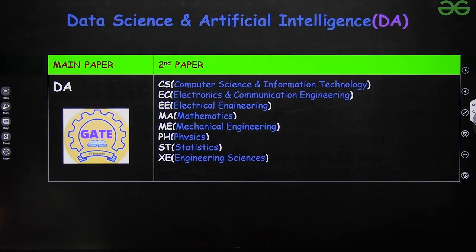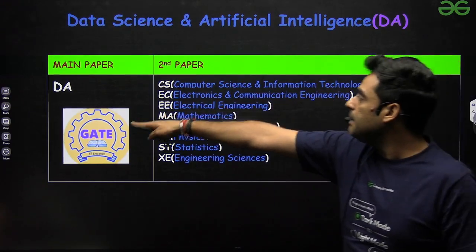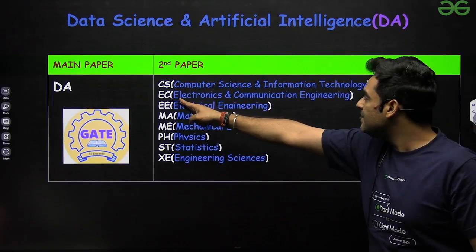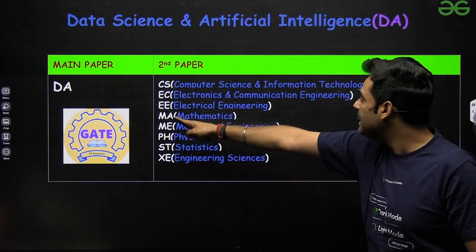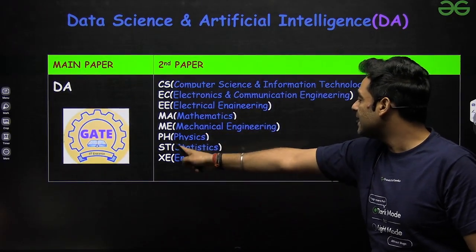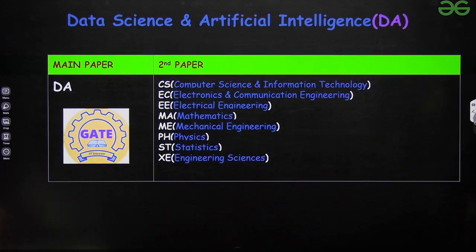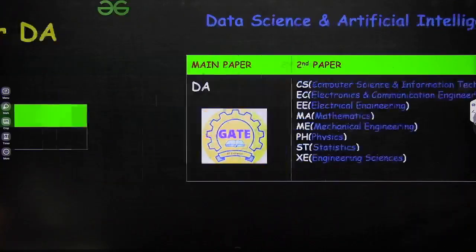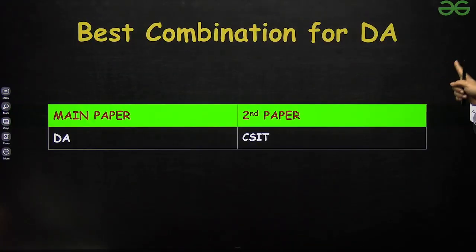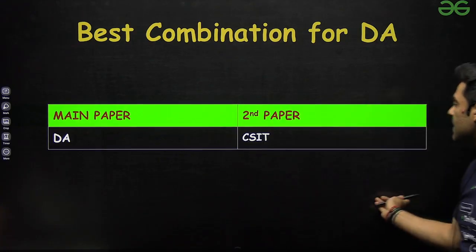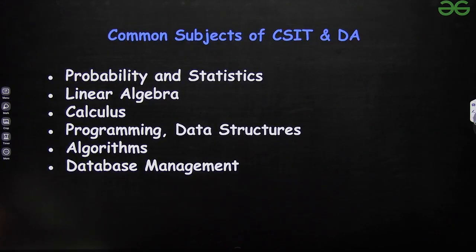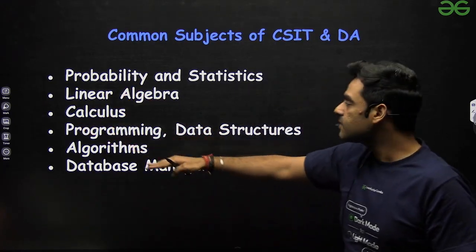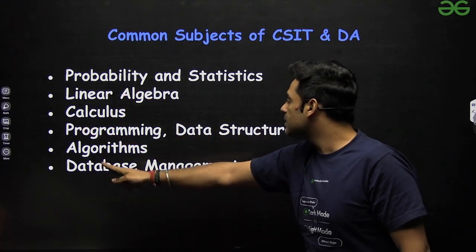For Data Science and Artificial Intelligence as the main paper, you have a number of options: Computer Science and IT, EC (Electronics and Communication), EE Electrical, Mathematics, Mechanical, Physics, Statistics, and Engineering Sciences. The best combination for DA according to me is again CSIT. The common subjects between CSIT and DA are: Probability and Statistics, Linear Algebra, Calculus, Programming and Data Structures, Algorithms, and DBMS.